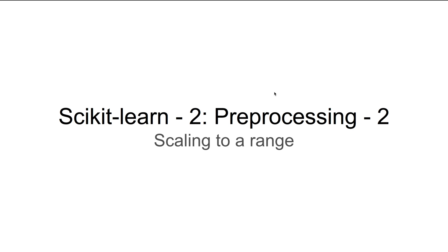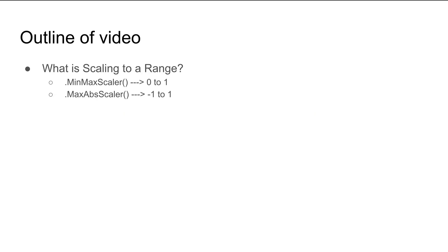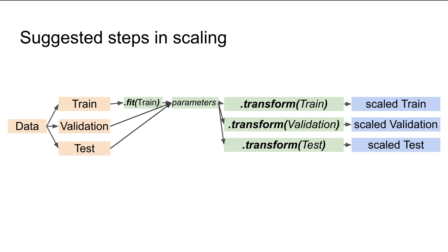Hello and welcome to Learn Data. I'm Nilesh and in this video we'll continue to learn about scikit-learn pre-processing. Specifically, we'll look at MinMaxScaler and MaxAbsScaler and try to understand what these two functions do. The MinMaxScaler brings the data into the range 0 to 1, and the MaxAbsScaler brings the data into the range -1 to 1.